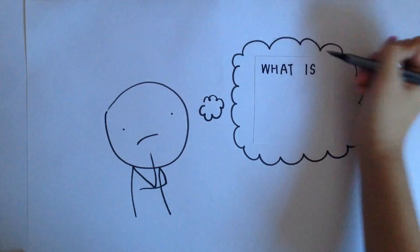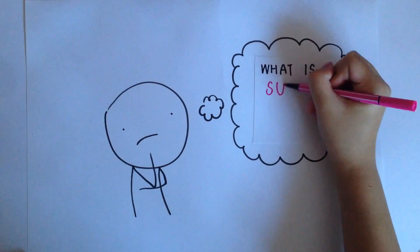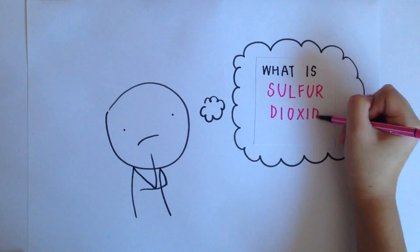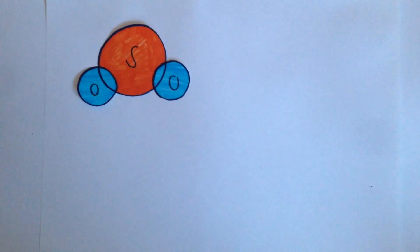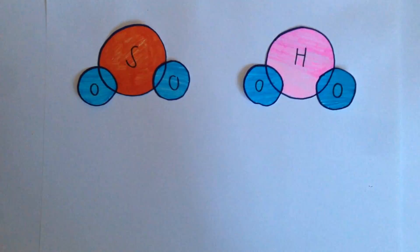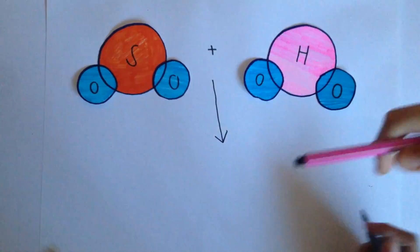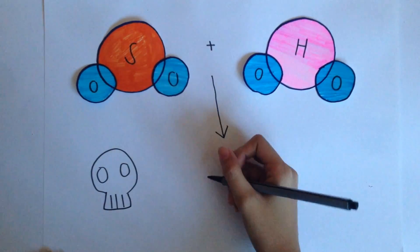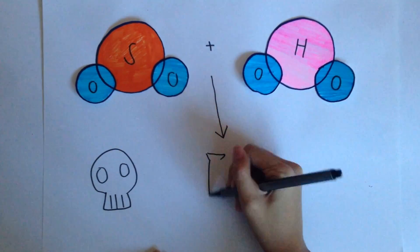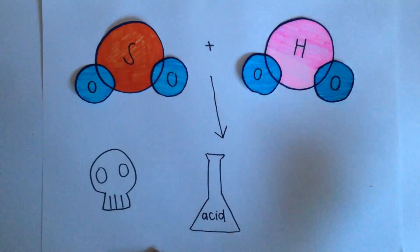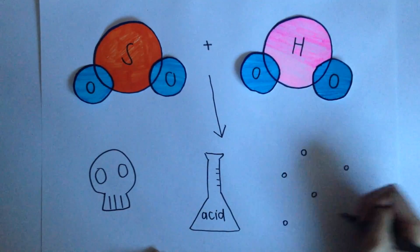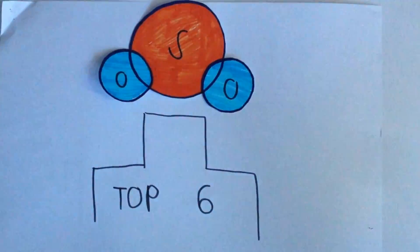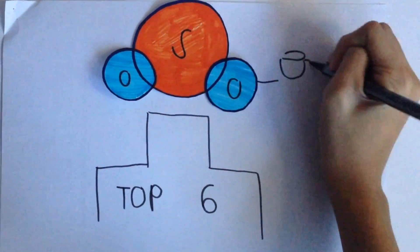Do you know about pollutants, but how many of you actually know about sulfur dioxide? Sulfur dioxide, which is SO2, is a colorless pungent gas. It reacts easily with other substances and water to form harmful compounds such as sulfuric acid, sulfurous acid, and sulfate particles. Sulfur dioxide is also one of the top 6 air pollutants.